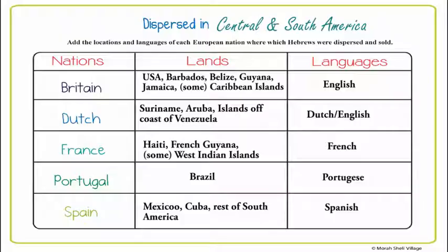You'll see this chart load up. It's going to be the same five nations. First, Britain — and they already know from last year that North America was occupied by Great Britain, or that many of the enslaved Africans were coming from underneath British rule.